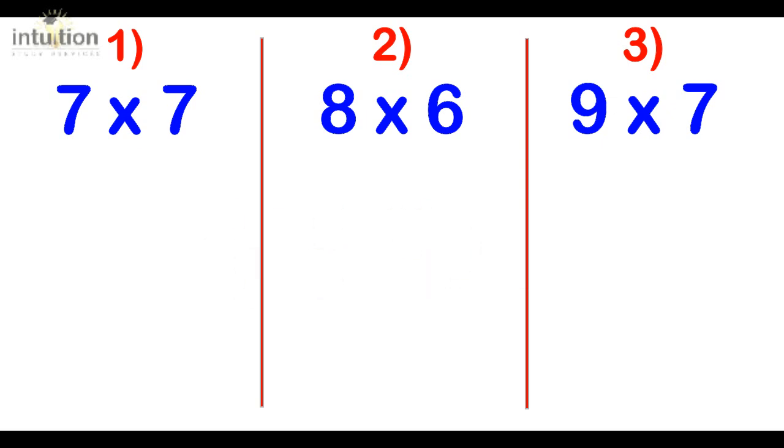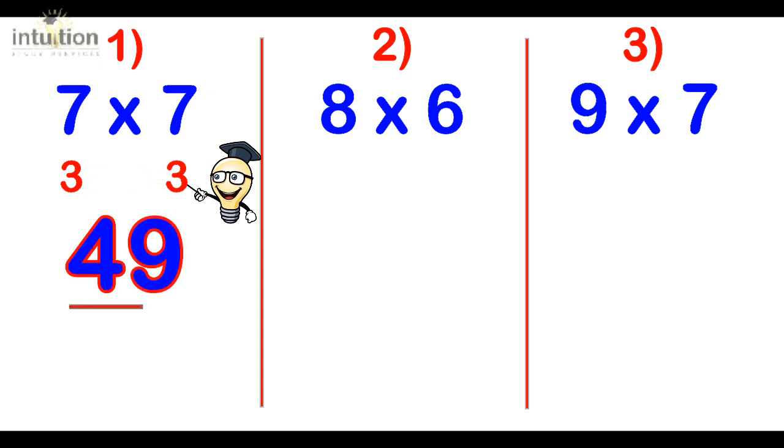Okay, so let's see how well you did with these questions. Okay, so number 1, 7 times 7. So 7 is 3 away from 10, and so is the other 7. And then we do 7 take away 3 is 4, and that gives the first part of the answer. And then 3 times 3 is 9, so the answer is 49.